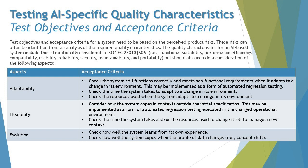One AI-specific characteristic is adaptability. If you want to understand it further, go back to Chapter 2 to look at the non-functional characteristics of AI-based systems. Typical acceptance criteria for adaptability include: check the system still functions correctly and meets non-functional requirements when it adapts to a change in its environment — this may be implemented as automated regression testing; check the time the system takes to adapt; and check the resources used when the system adapts to a change in its environment.